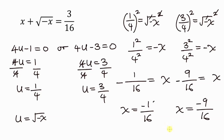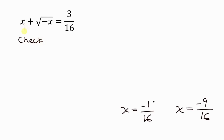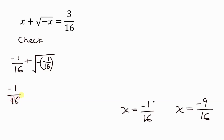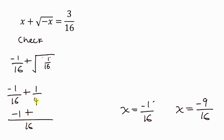Let's check if our answers are correct. For x equals negative 1 over 16: we substitute to get negative 1 over 16 plus the square root of negative times negative 1 over 16. The two negatives make a positive inside the square root, so we have the square root of 1 over 16, which is 1 over 4. Taking the LCM of 16: negative 1 over 16 plus 4 over 16 gives 3 over 16. This checks out.